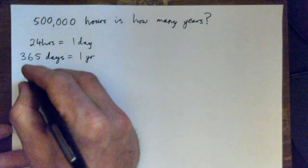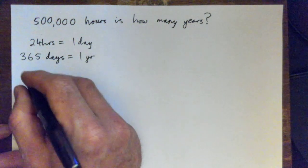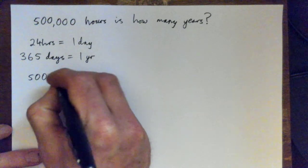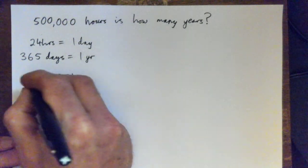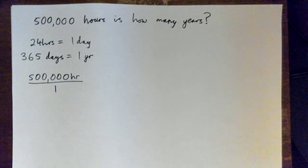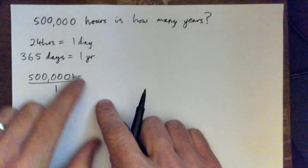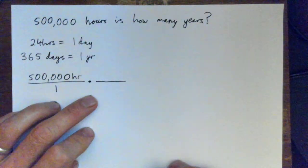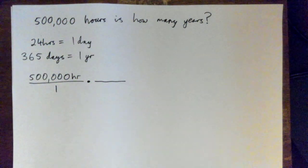So the unit analysis method is: we put our thing that we're converting, we put it over one. That's the first step, over one. And then we say, well, what are we going to convert it to first? You got to convert it by multiplying by a unit fraction. And what do you want to convert it to first?